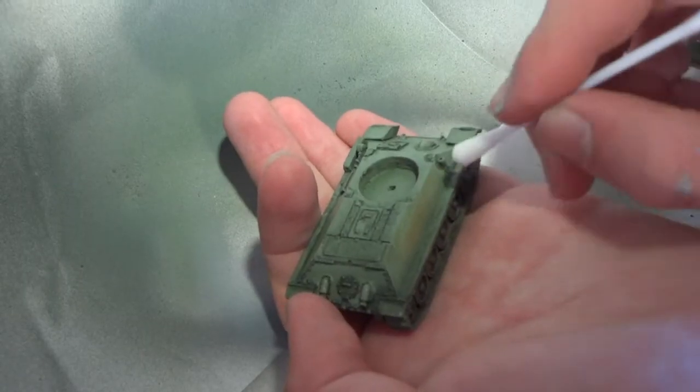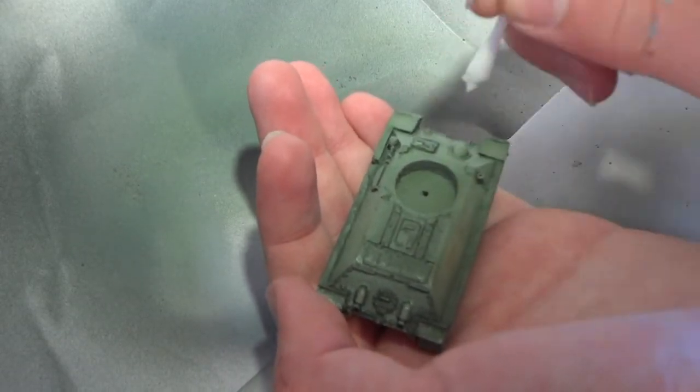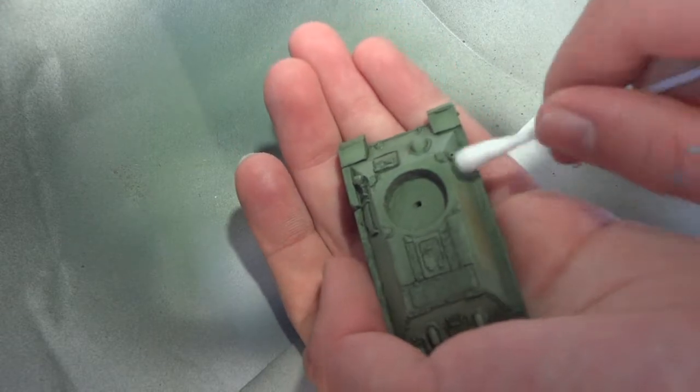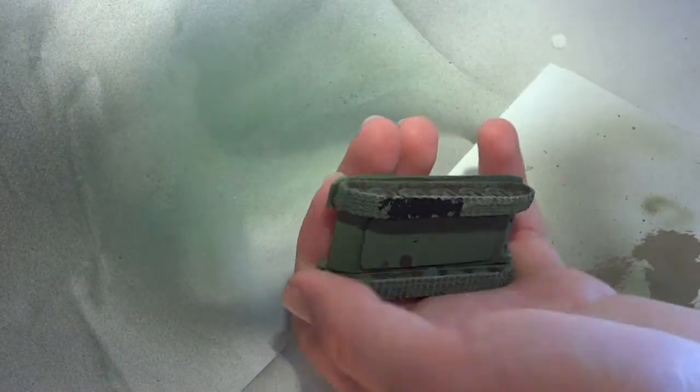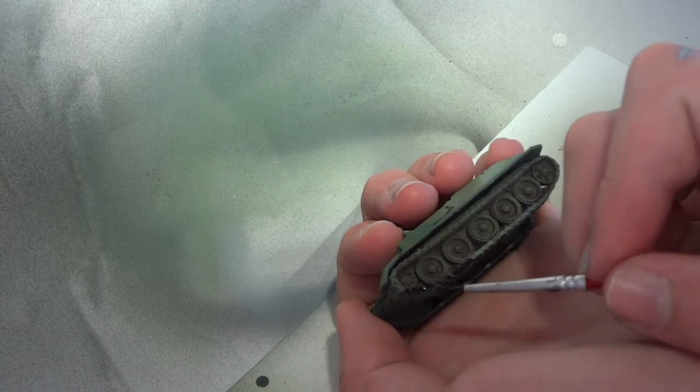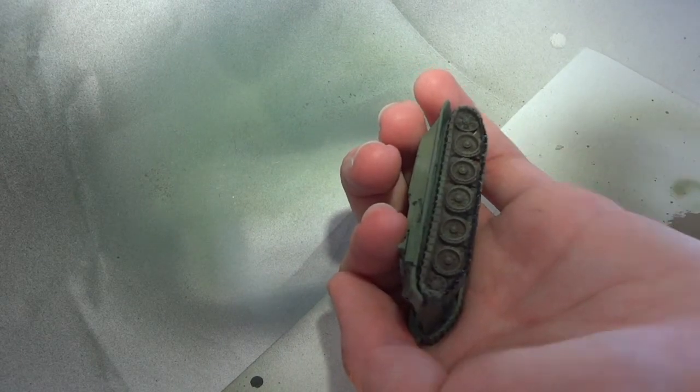Any excess wash, when dry, is removed with a Q-tip dipped in Windex. Vallejo Model Air Black is then used to base coat all the tank tracks and any of the other black details. It's also used to base coat anything that's going to be a silver or metallic colour.